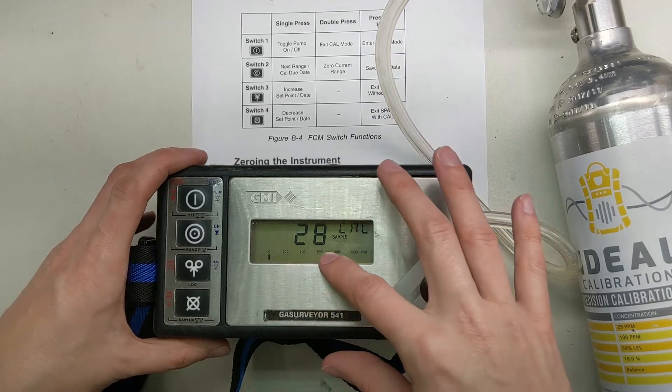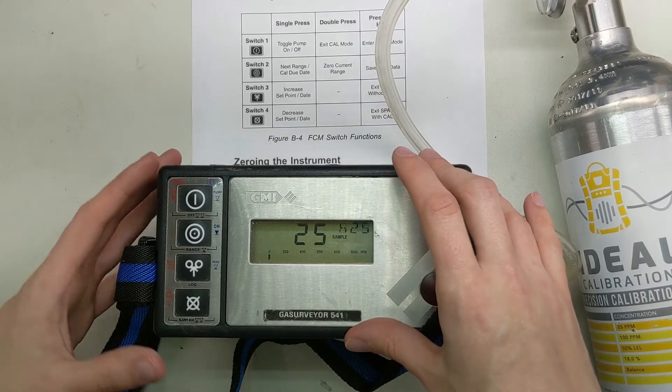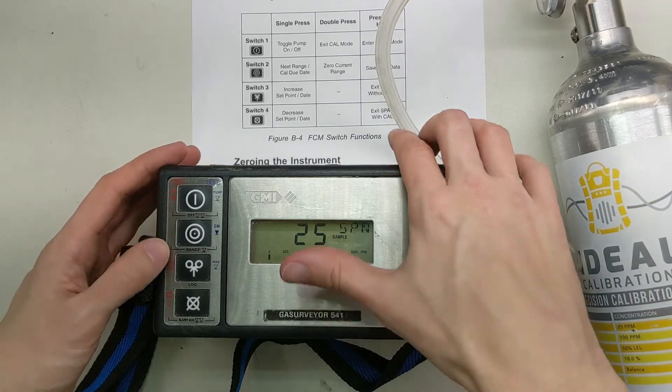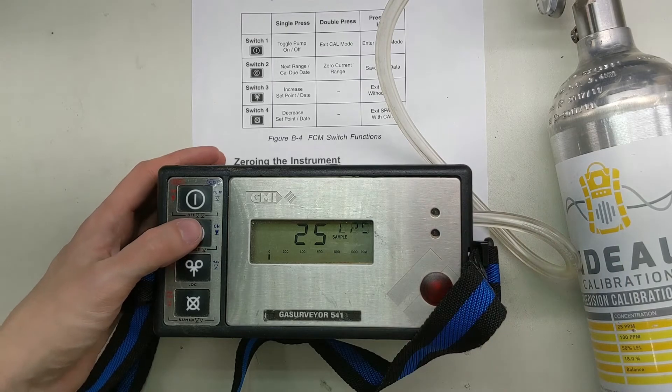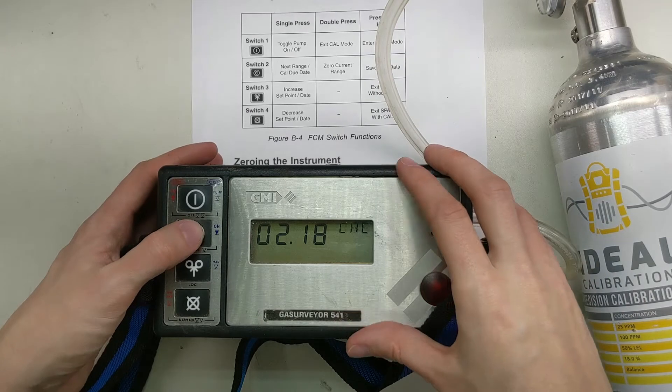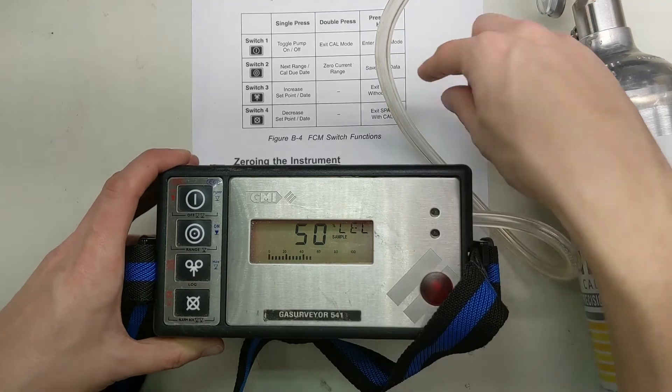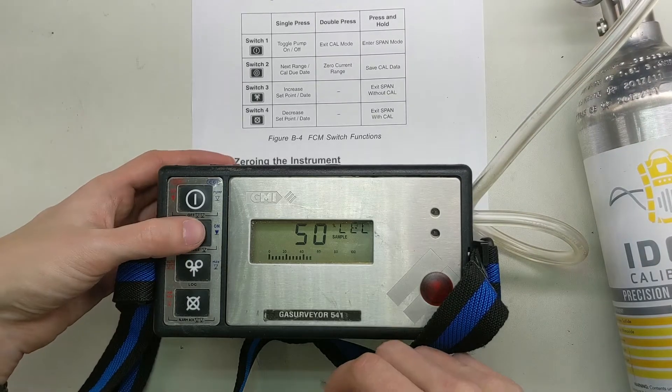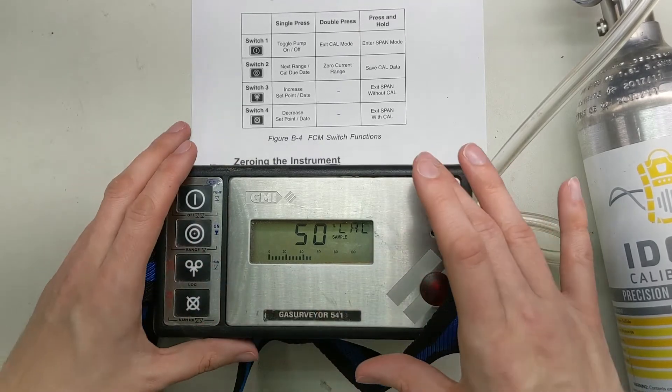Now we're going to press one time, go to H2S. Now it's seeing 28. We're going to go into span mode, press and hold. This is 25, that's what we want. We're going to save this Cal, exit span with Cal. Good deal, 25. Now next mode brings us to the date. Now we're back to the beginning. Now this is an important step to do now. We need to save Cal data. Press and hold this button here. And now it has saved the Cal data.